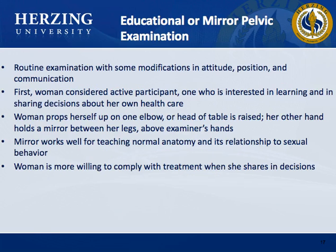When assessing the female genitourinary system, make sure to incorporate health promotion. For example, explain that the first vaccine for preventing cervical cancer was recently approved for use in girls 9 to 16 years old — it targets the human papillomavirus, which causes most cases of cervical cancer. The vaccine is recommended before girls become sexually active, but is not effective in individuals already infected. Because the vaccine does not prevent all types of cervical cancer, remind the patient that routine pelvic exams and Pap tests are still necessary.